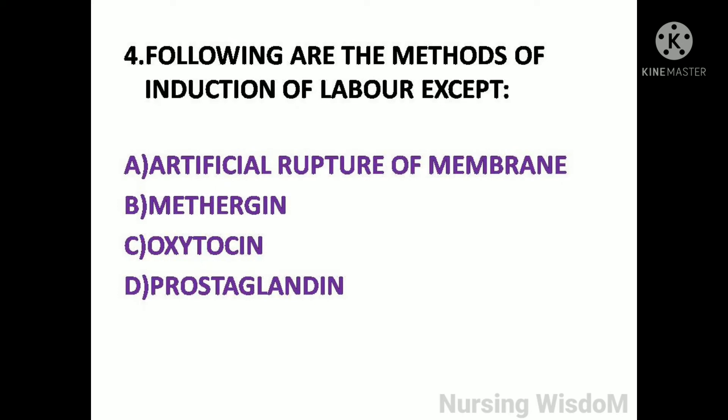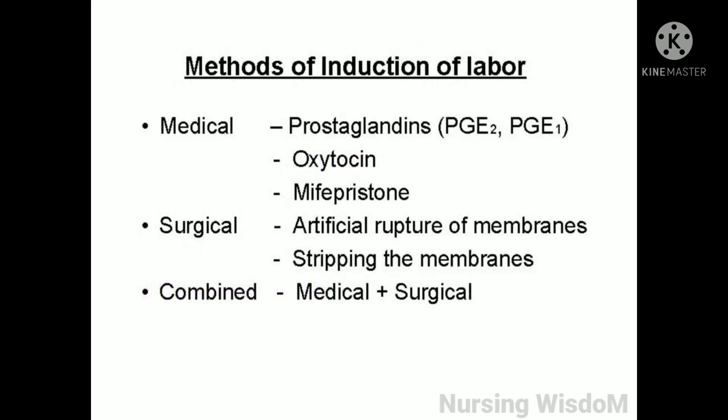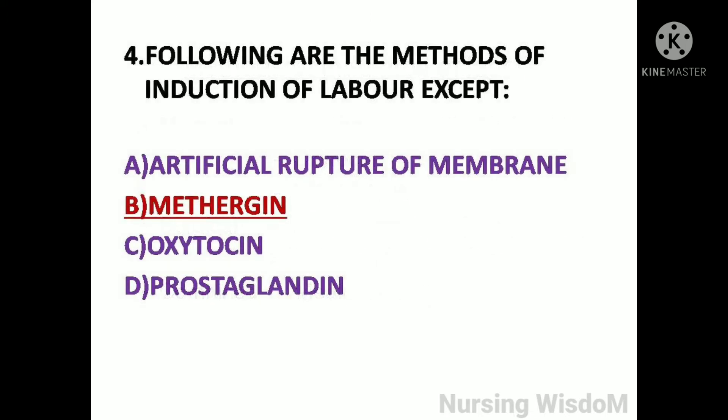Next question: Following are the methods of induction of labor except — option A: artificial rupture of membrane; option B: methergine; option C: oxytocin; option D: prostaglandin. Methods of induction of labor: medical methods include prostaglandins, oxytocin, and mifepristone; surgical methods include artificial rupture of membranes and stripping the membranes. So here the answer is option B, methergine.